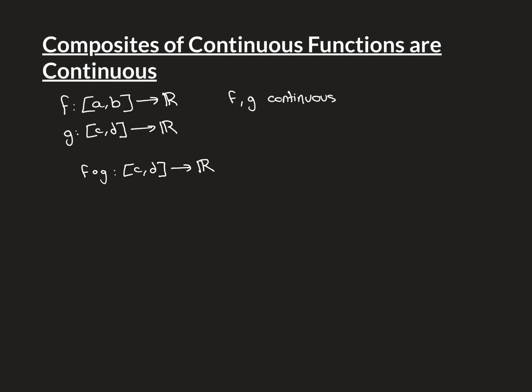We're going to have two functions, f and g, which are both real-valued functions defined on some subset of the real line. For simplicity, those subsets are closed intervals: the domain of f is the interval [a, b] and the domain of g is the interval [c, d]. We assume both functions are continuous over their entire domain.